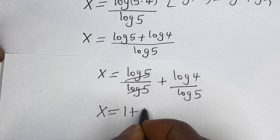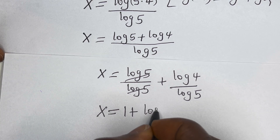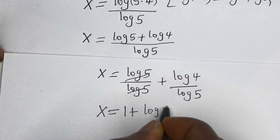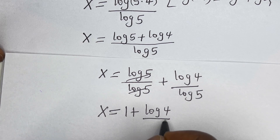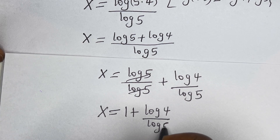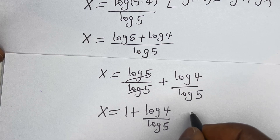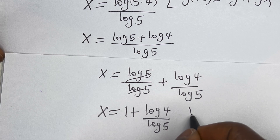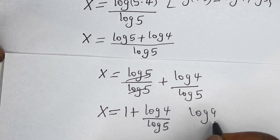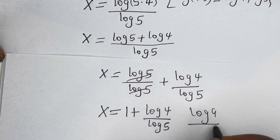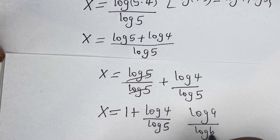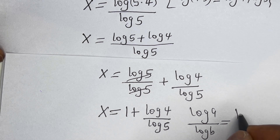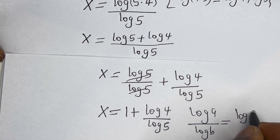s is equal to log 5 divided by log 5 — this log 5 cancels — so s is equal to 1 plus log 4 divided by log 5. If you have log a divided by log b, this is equal to log base b of a. Therefore s is equal to 1 plus log base 5 of 4.